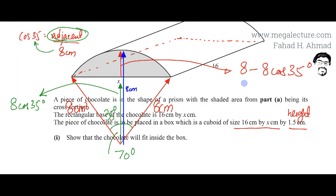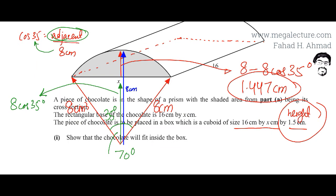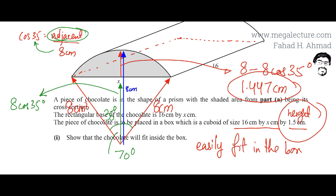The answer is 1.447 centimeters — that's the height of the gray section. The height of the box was given as 1.5 centimeters, and the height of the chocolate is 1.44 centimeters, which is less than the box height. Therefore, the chocolate will easily fit inside the box.